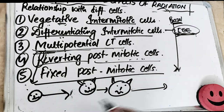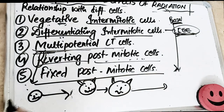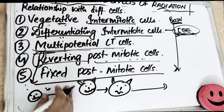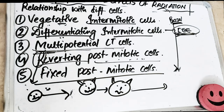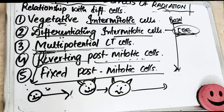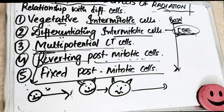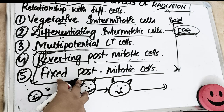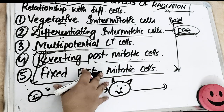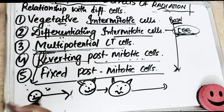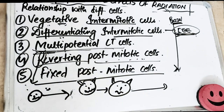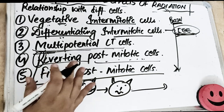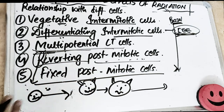The fifth and last type is the fixed post-mitotic cell. These cells will not divide no matter what happens — they are the most resistant, stubborn cells. They are highly differentiated; once they become mature, they are incapable of division. Examples include neuronal cells, striated muscle cells, and squamous epithelial cells.